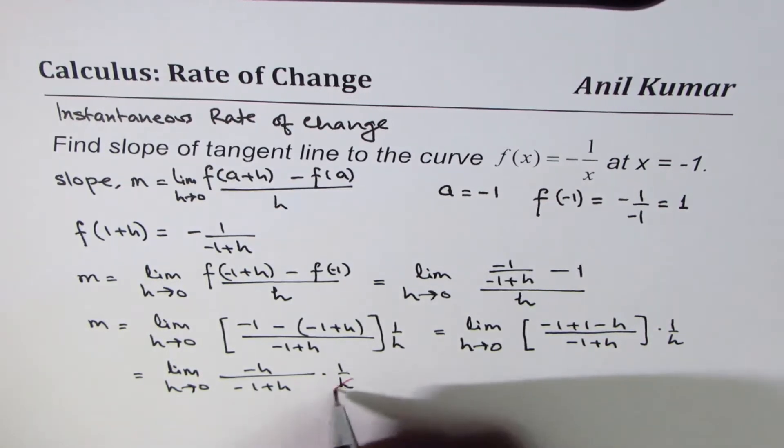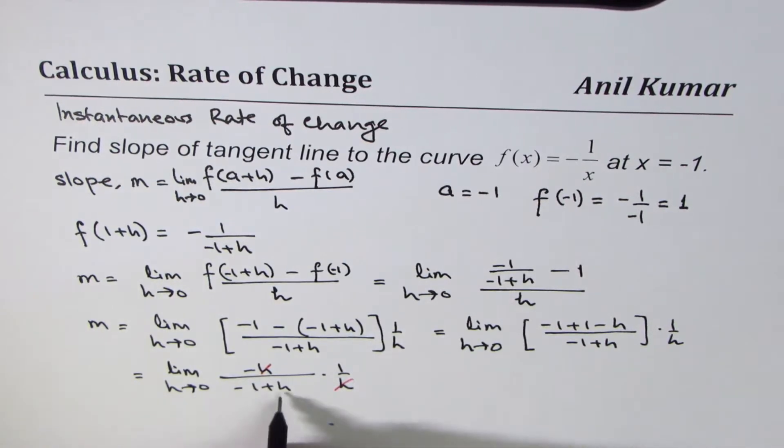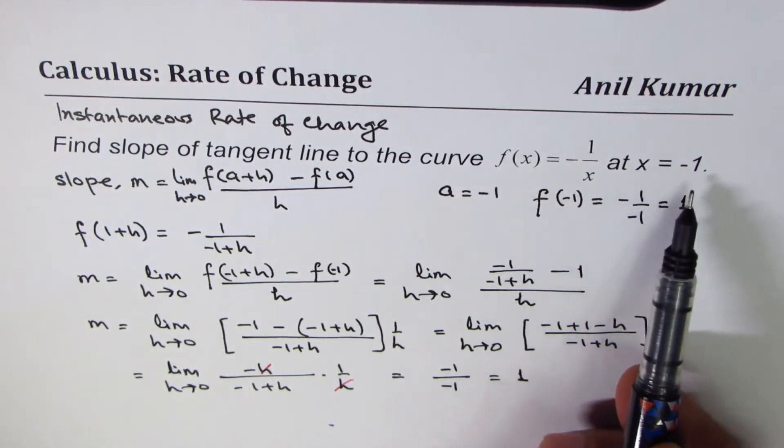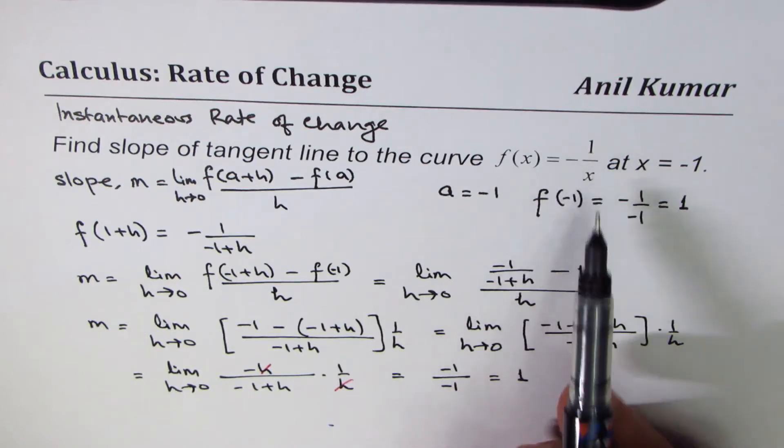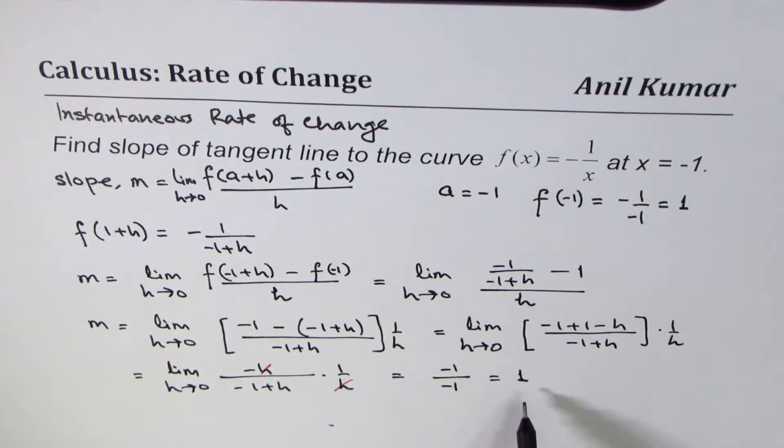So this h will cancel out. That is the whole purpose. Once it cancels out, we can substitute 0 for h. So we get here minus 1 over minus 1, and that is indeed 1. So the slope of the tangent line at x equals to minus 1 for the function minus 1 over x is 1.